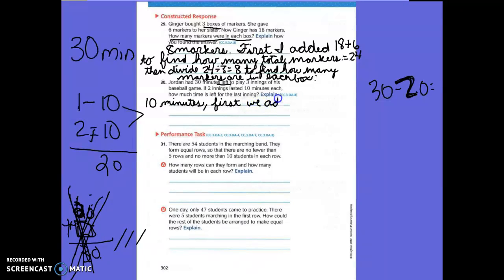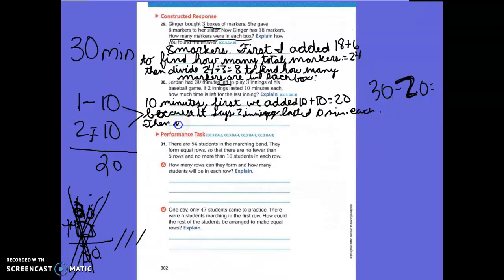Now you have to tell me how you figured that out. First, we added 10 plus 10. First, we added 10 plus 10 equals what? 20. Why did we add 10 plus 10? Because it says two innings lasted 10 minutes each. And what did we do? We subtracted 30 minus 20. What did that equal? 10 minutes left.